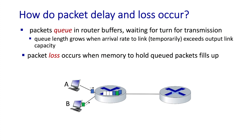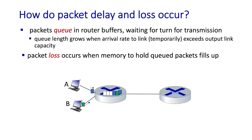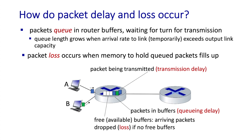Recall that we learned in the last section that packets queue in router buffers, waiting for their turn for transmission. We also learned that packet queues grow longer at a router's output link when the arrival rate to that link, hopefully just temporarily, exceeds the output link's capacity. And we learned that packet loss can occur when the memory needed to hold packets fills up.